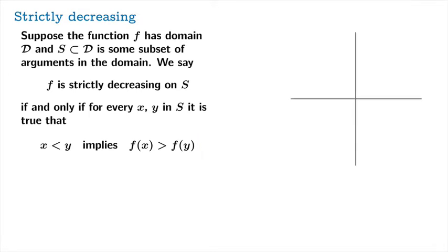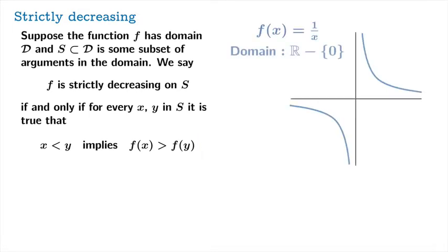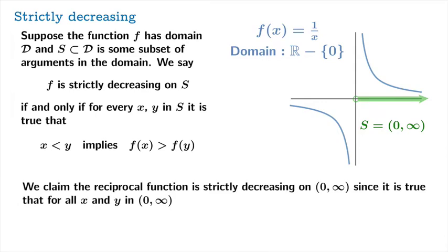Here is the reciprocal function defined on the punctured real line — all the reals with 0 removed, since you can't reciprocate 0. First, we'll let s be the open interval from 0 to infinity, and we claim that the reciprocal function is strictly decreasing on this set, since it is true that whenever you choose x less than y, 1 over x is greater than 1 over y. That satisfies our definition, so the reciprocal function is strictly decreasing on (0, ∞).